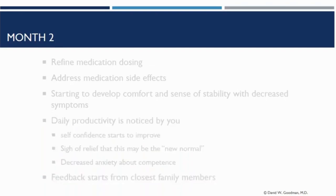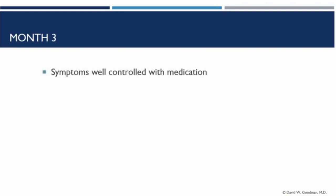Feedback from closest family members: those family members you spoke to start saying, 'You sound more comfortable, you sound happier. I can talk to you without you flying off the handle. I notice you're getting things done — when I asked you to do something, it actually got done in two days instead of three months.' Closest family members start to feel good. Often these are family members in the house you're living in — a spouse and children.